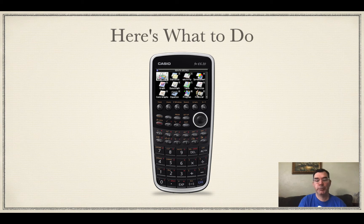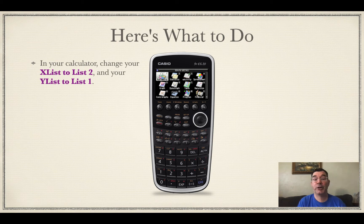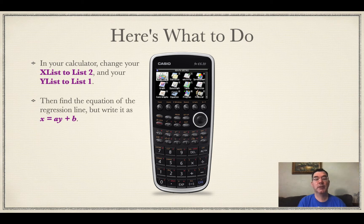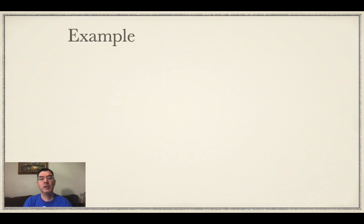Alright, so here's what you do. In your calculator, change X list to list 2 and your Y list to list 1. Normally it would be X list is list 1 and Y list is list 2, just like normal, but we're going to switch the order of those and then you find the equation of the regression line. But what you're going to do is with those A and B values that it gives you, you're going to write it as X equals A Y plus B.